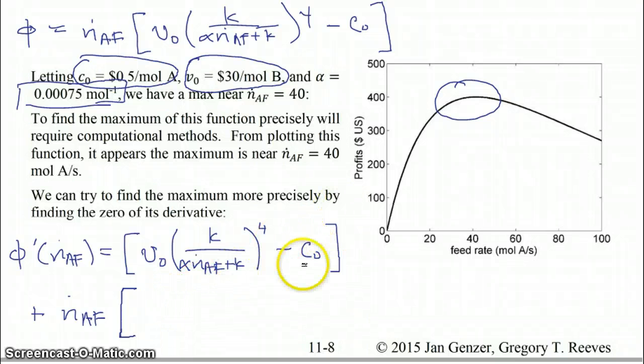So the derivative of what's inside the square brackets. And so C0 doesn't have N dot A feed in it, so that's not going to carry over into the derivative. But inside here, we're going to have V0 times the derivative of this part with respect to N dot A feed. So that'll be 4 times this part, this quotient, to the third power. That's just the power rule. And then times the derivative of what's inside the parentheses with respect to N dot A feed.